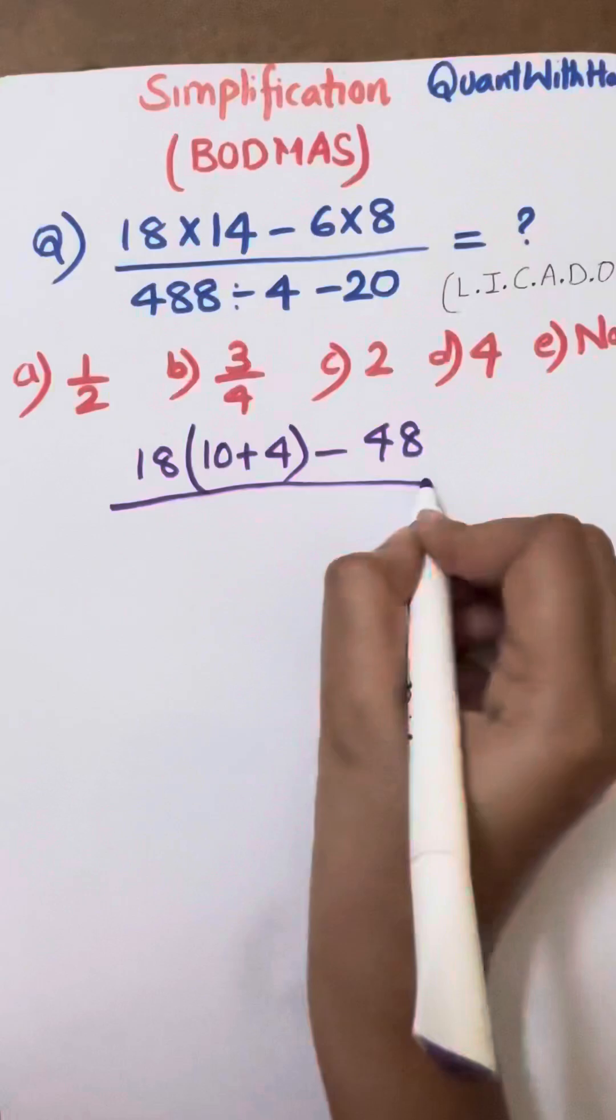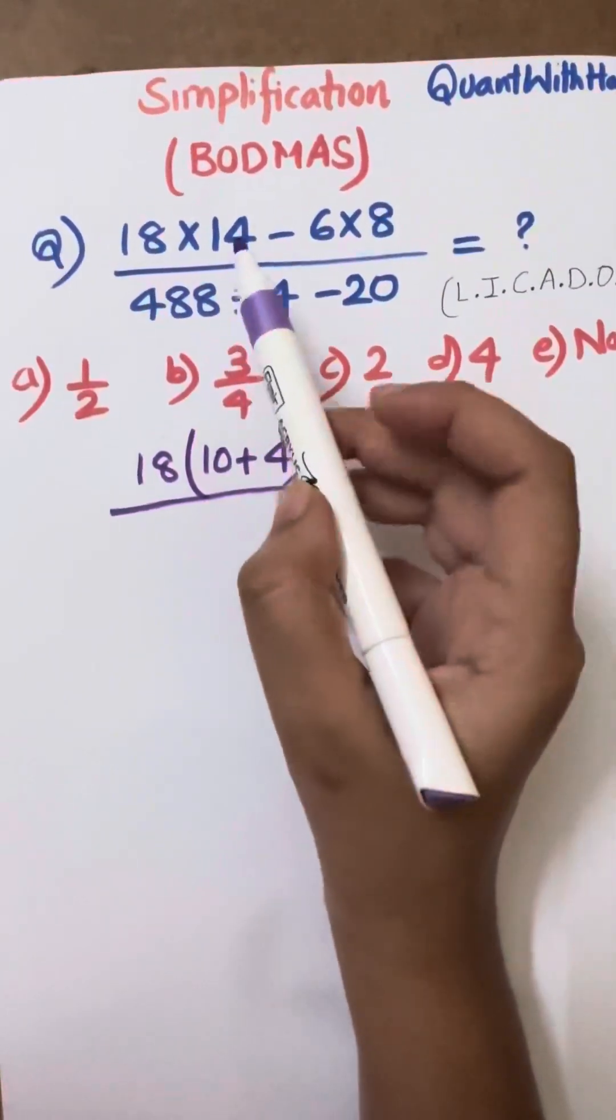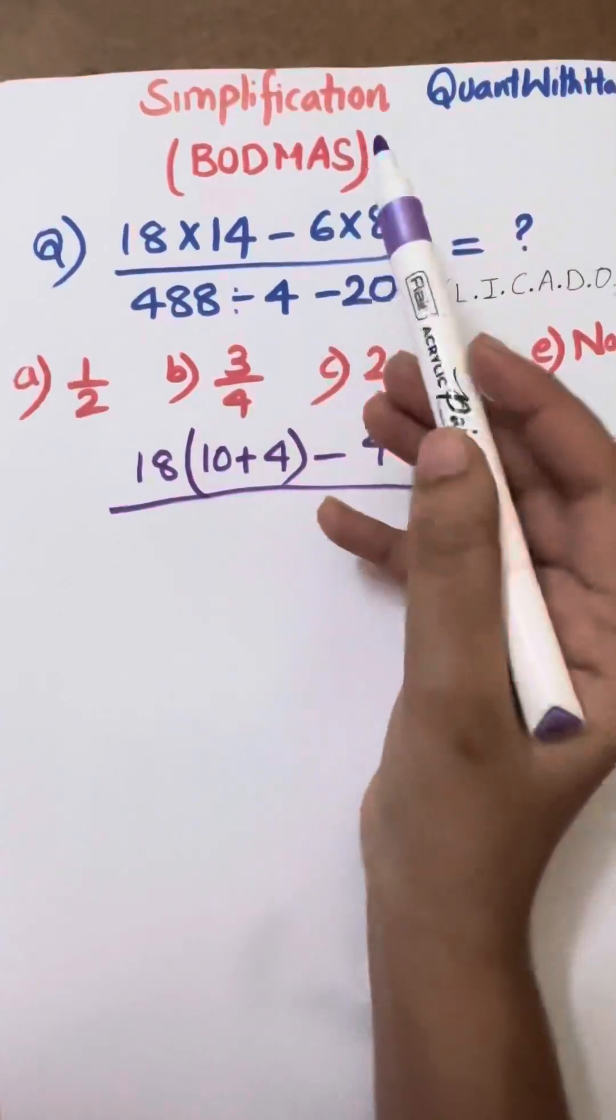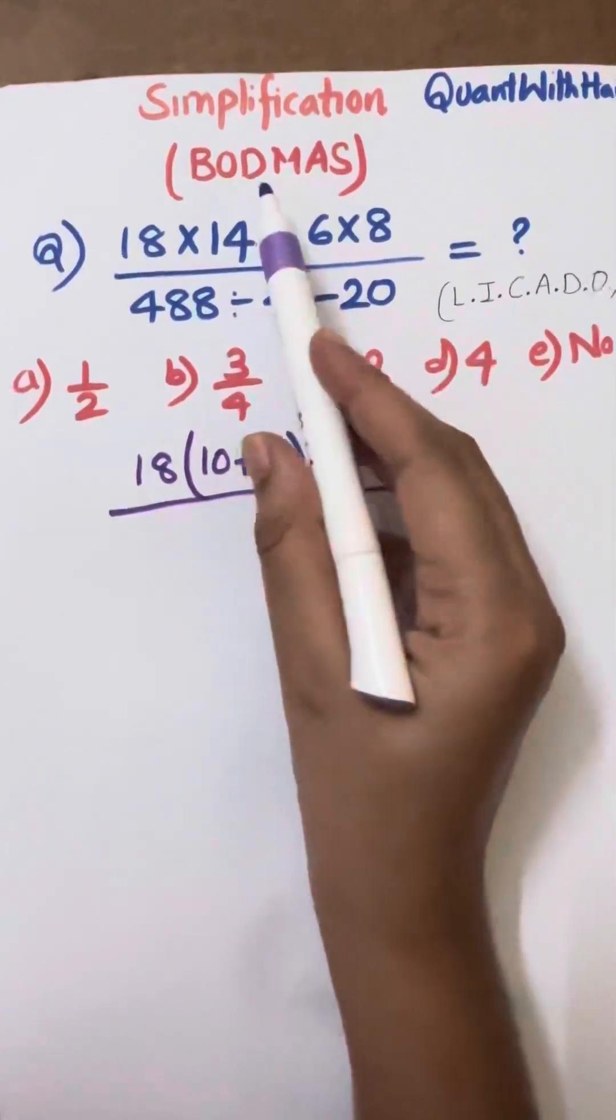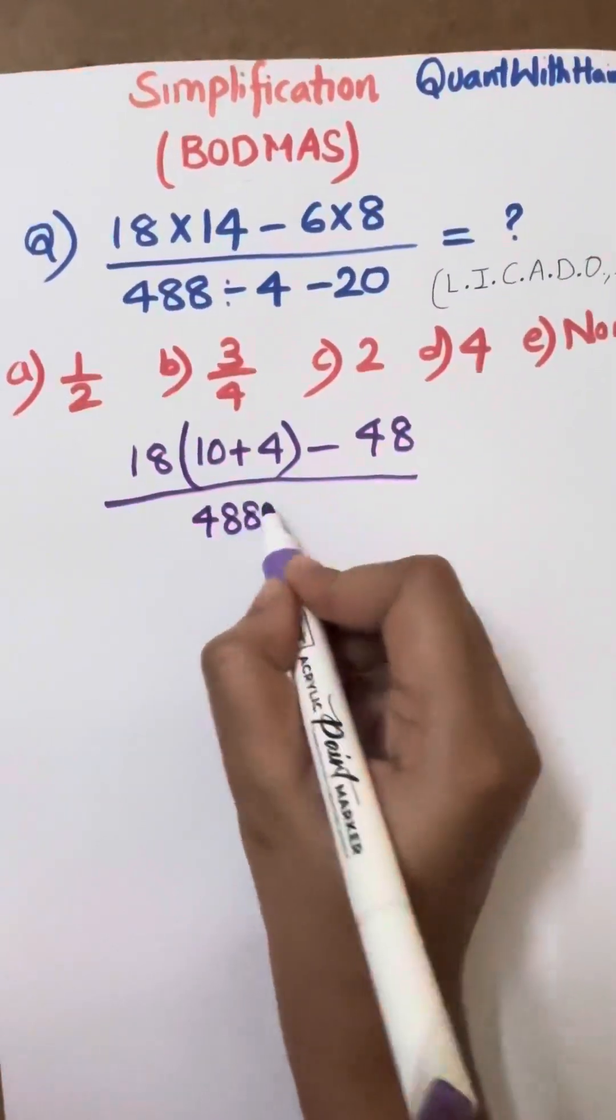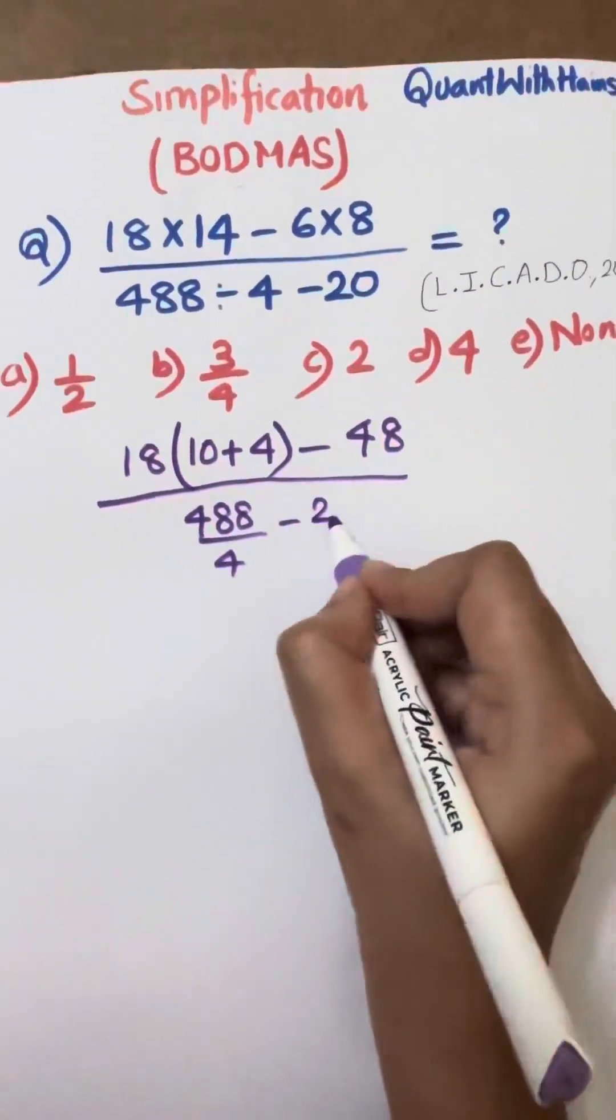If we come to the denominator, division is there, multiplication is not there, addition is not there, subtraction is there. So first we will do division, means 488 divided by 4 minus 20.